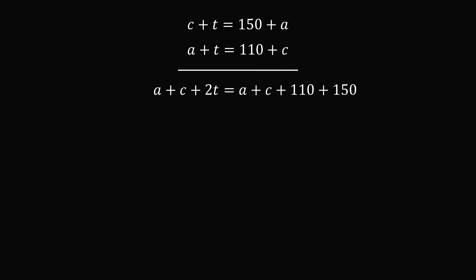Now all we need to do is simplify. The a on the left cancels with the a on the right, and the c on the left cancels with the c on the right. What remains is 2t = 110 + 150, which means 2t = 260. Dividing both sides by 2, we get t = 130 centimeters. The height of the table is 130 centimeters, and we've solved the problem.